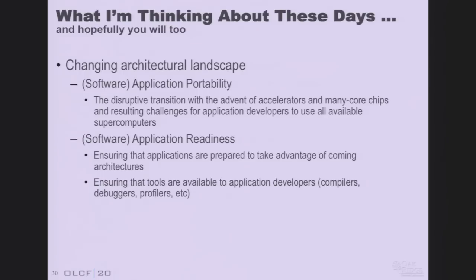Another thing I'm worried about is application readiness. As Rob said, we are at the cusp of something new, something very disruptive. Ensuring that application programmers — people like you — are educated on what's coming, that you're prepared for it, and that we're thinking about all the challenges we're going to encounter. Ensuring that applications are prepared to take advantage of coming architectures, and hand in hand with that, ensuring that the tools of our trade — those libraries, debugging tools, profiling tools, compilers — are ready so we can enable our science on next-generation machines.